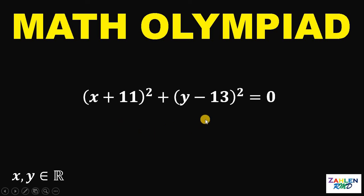Now, we have a square number plus another square number that is equal to 0. And take note that x and y are both real numbers. So, to make this happen, x plus 11 must be 0. And y minus 13 is also 0.